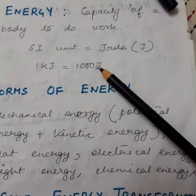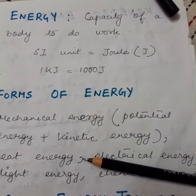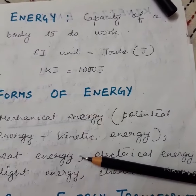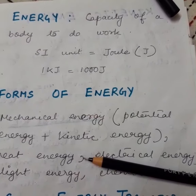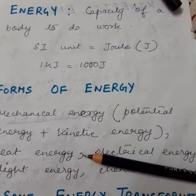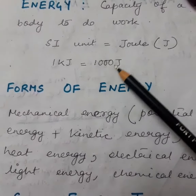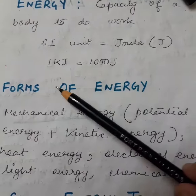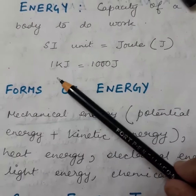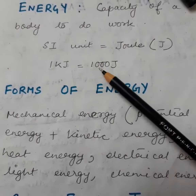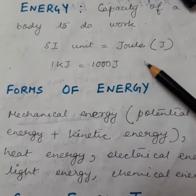The SI unit of energy is similar to that of work done, that is Joule. And 1 Kilojoule is equal to 1000 Joule. Please remember this — 1 Kilojoule is equal to 1000 Joule.